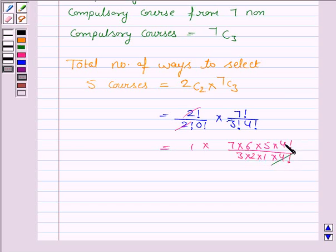4 factorial gets cancelled with 4 factorial. 3 into 2 is 6, which gets cancelled with 6, and we have 7 into 5, and it is equal to 35.